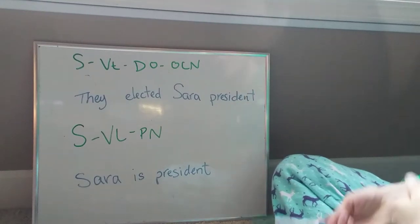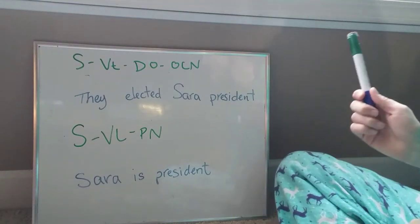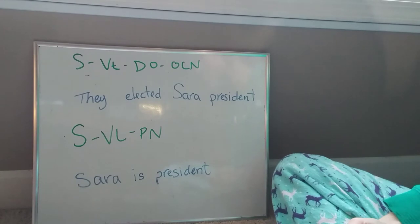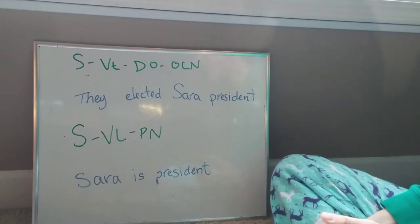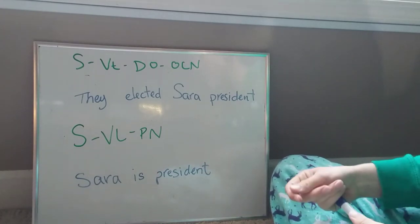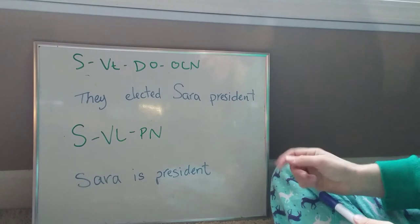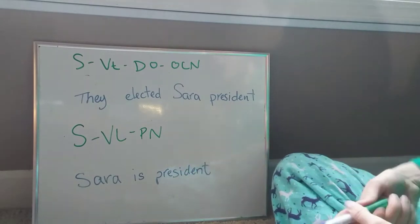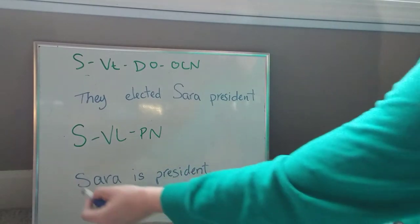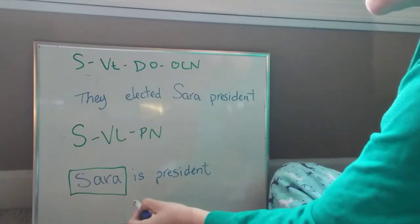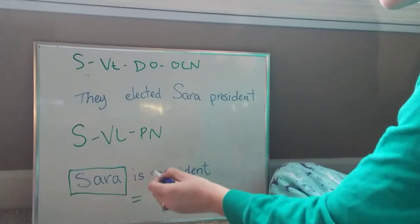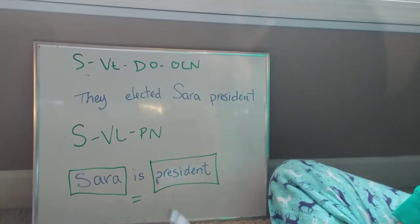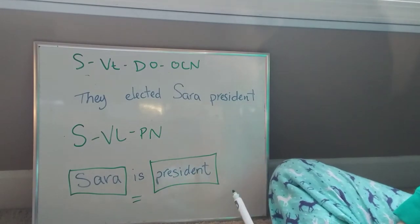This week we introduced the SVT-DO-OCN sentence pattern. This sentence pattern is very similar to the SVL-PN sentence pattern. In the SVL-PN sentence pattern, the subject — which in this case is Sarah — equals the predicate nominative, which is president. So Sarah equals the president.